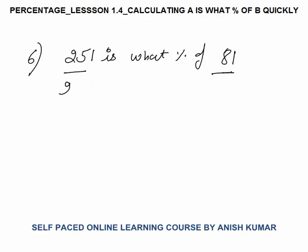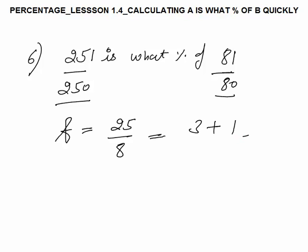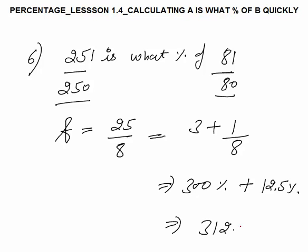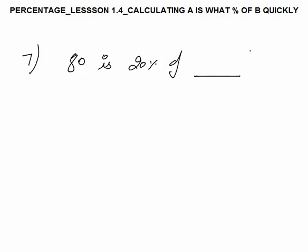Next: 251 is what percent of 81? This seems difficult, so we approximate: 250 instead of 251, and 80 instead of 81. The fraction becomes 25 by 8. Break this as 3 plus 1 by 8: 3 is 300 percent, and 1 by 8 is 12.5 percent, so the approximate answer is 312.5 percent. In the exam, pick the nearest answer to 312.5.